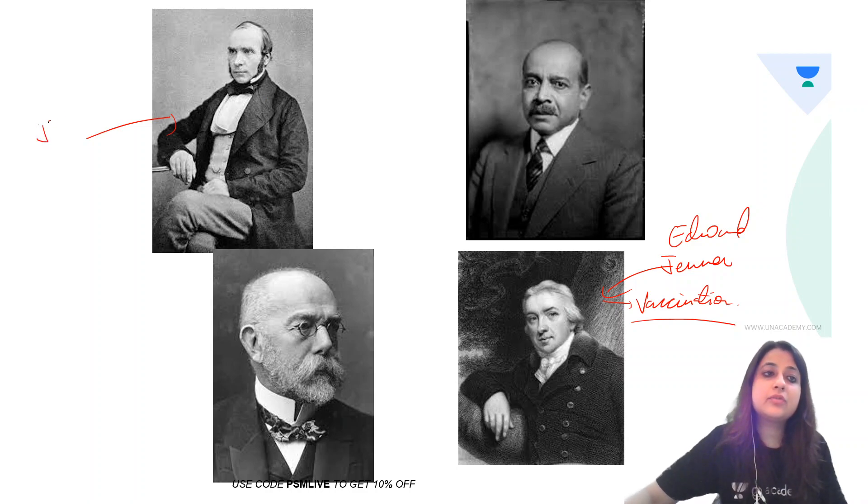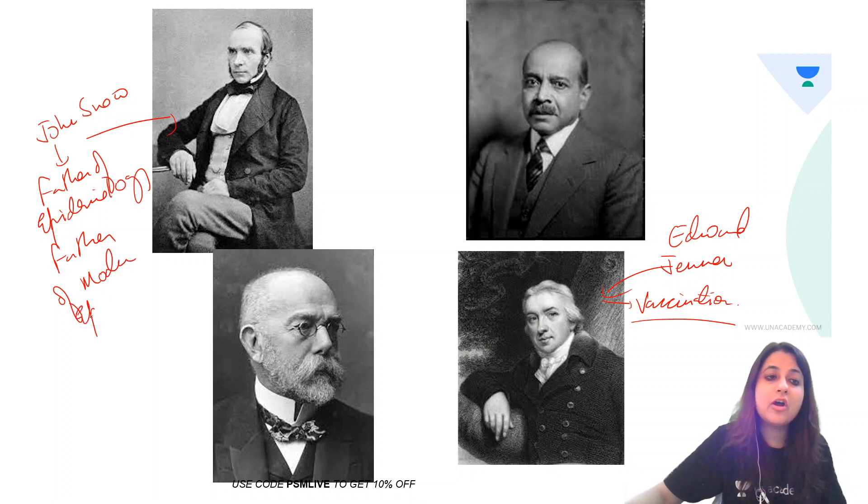This one over here is who? This one over here is John Snow. John Snow is the father of epidemiology or you could also call him the father of modern epidemiology. He was the one responsible for finding out about the cholera epidemic. He gave the concept of spot maps to show the local distribution of cases.